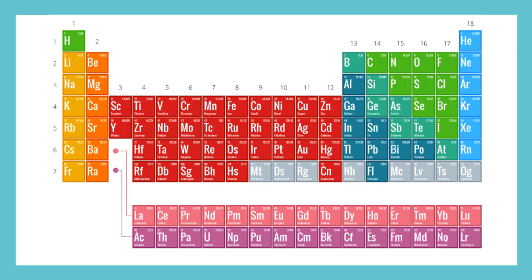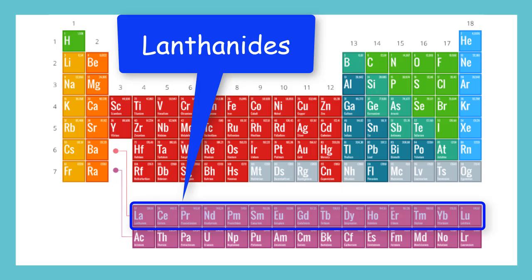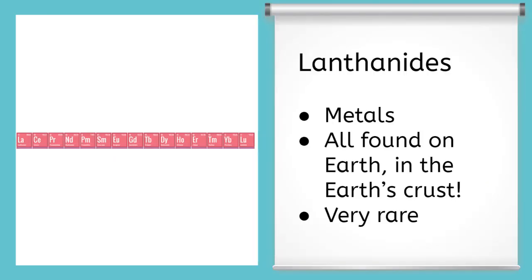Let's check out these bottom rows now. First, we will take a peek into these pink boxes. If we follow the arrow up, it would appear that they technically belong in period 6. These are called lanthanides. The lanthanides are all metals that are found naturally occurring in the earth's crust. But they are very rare on earth. That means that they're hard to find and there's not a lot of them that exist.